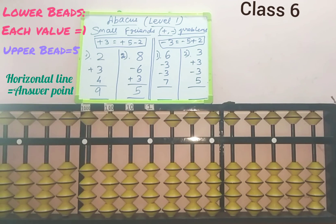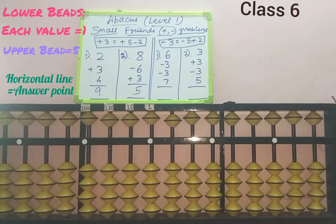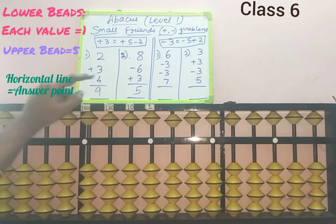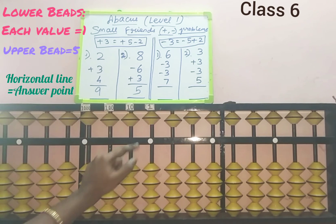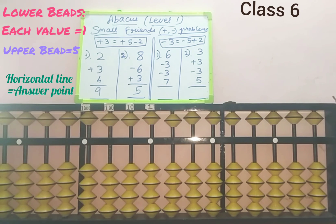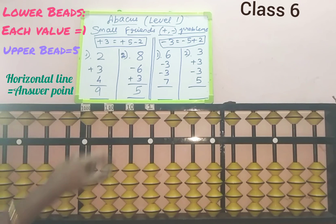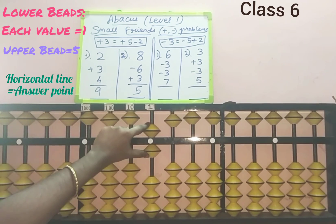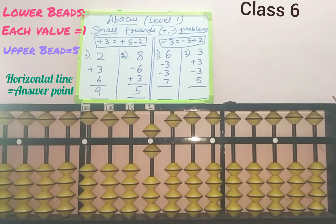Next we move to the subtraction part. This is the formula for subtracting 3: while doing subtraction, the small friend boss (5) will be in minus. So minus 3 equals minus 5 plus 2. Now we start the first sum in the subtraction part: 6 minus 3 minus 3 plus 7. First, add 6 in the ones slot. For adding 6, start from the upper part: 5, 6. Six beads touch the answer point — 6 is added.